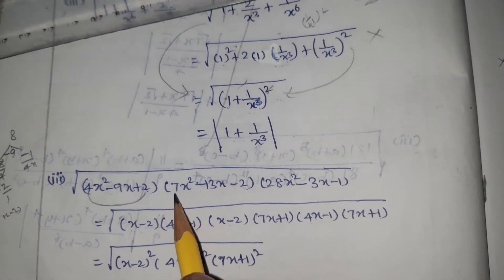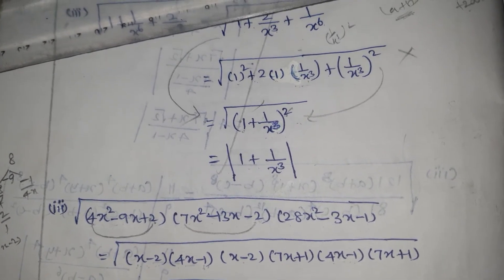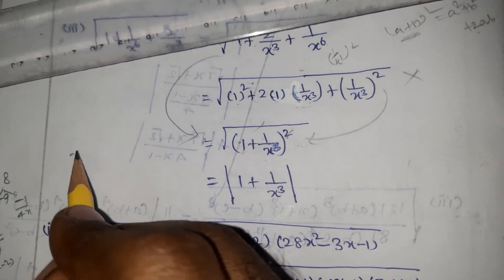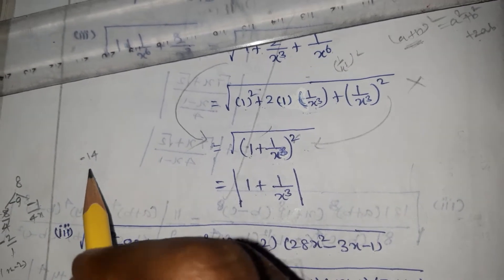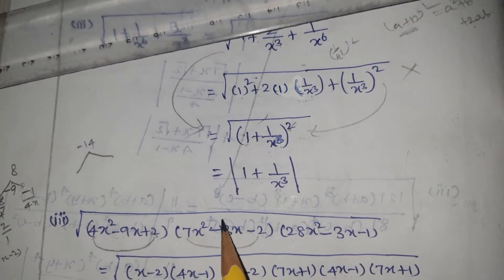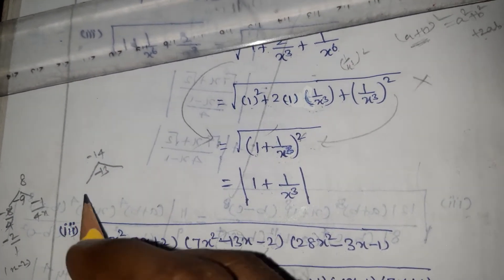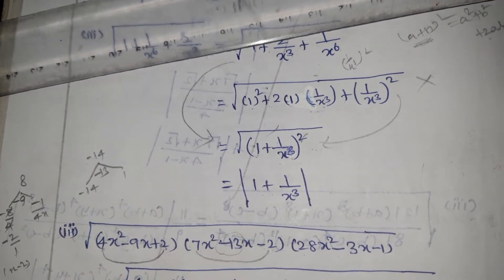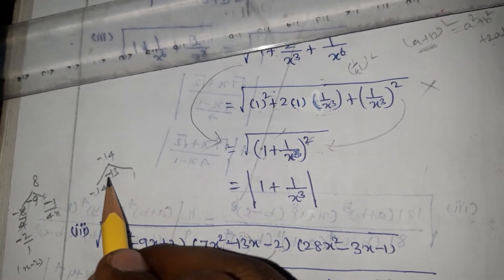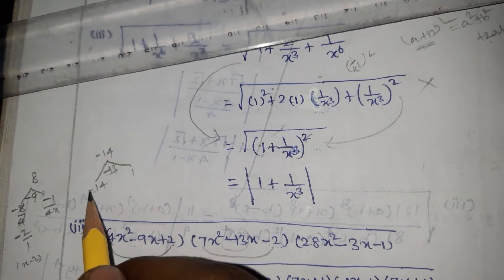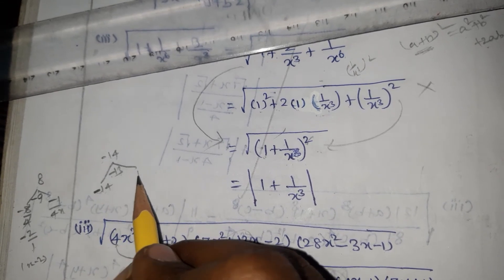Next, for 7x squared minus 13x minus 2: the product of the first and constant coefficients is 7 times minus 2 equals minus 14. The required middle value is minus 13. So we need minus 14 plus 1, which gives minus 13. The negative larger value is minus 14 and the positive smaller is plus 1.